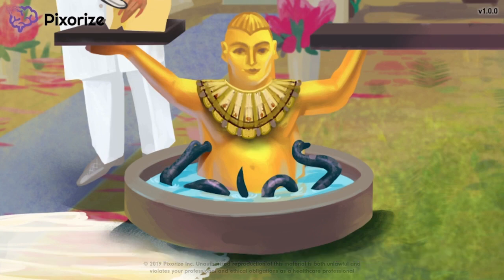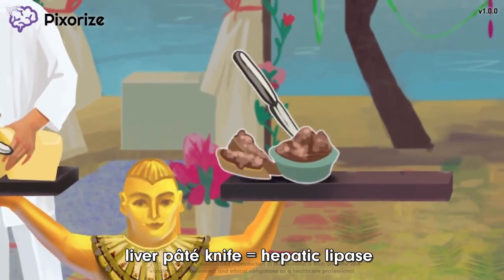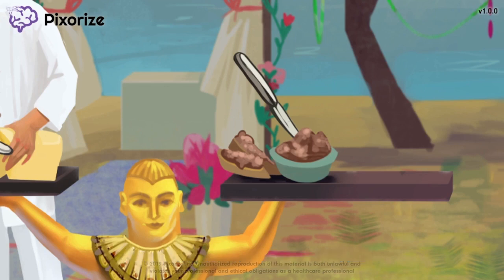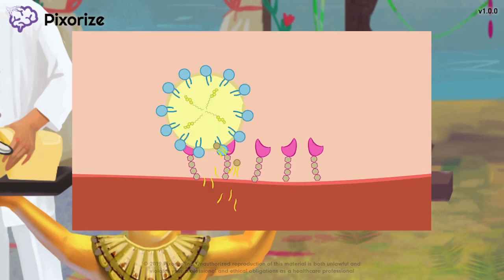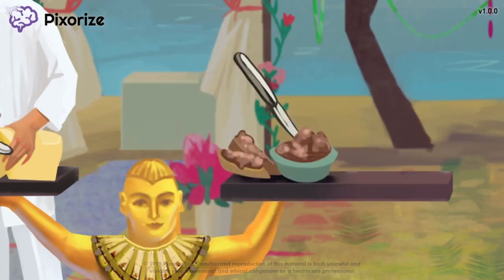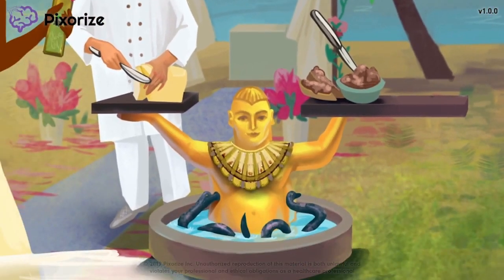Let's move on to IDL processing. Take a look at this liver pate knife — a wedding is never fully complete without liver pate. This liver pate knife should help you remember hepatic lipase: liver pate for hepatic, and knife for lipase. IDL still has some triglycerides in it, and that's what hepatic lipase is for — it cleaves off the rest of IDL's triglycerides. When the remaining triglycerides are removed, we are left with LDL. Notice that IDL has two fates: it could be taken up by the liver via ApoE, or it could be further processed into LDL by hepatic lipase, making hepatic lipase an important regulatory step in this pathway.